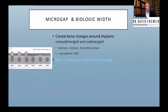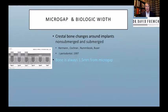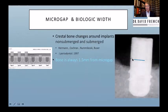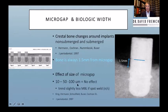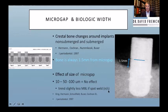What about the micro-gap? That connection creates something called a biologic width — from that connection point there will be a 1.5 mm drop because bone doesn't want to be next to bacteria, as shown by Dr. Cochran's group. If we have a gap here, we always get 1.5 mm of loss with a butt joint connection. Making the gap only 10 microns had no effect — it's not the size of the gap that matters. Even spot-welding it to reduce mobility still had no significant benefit.